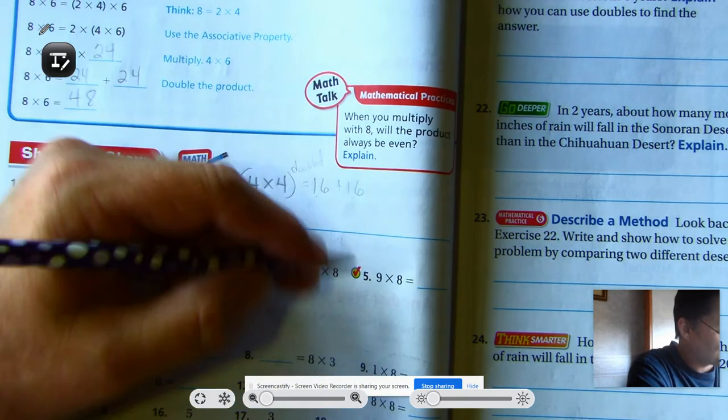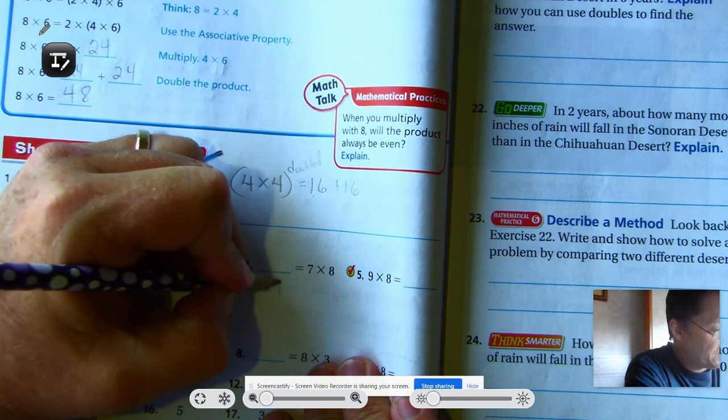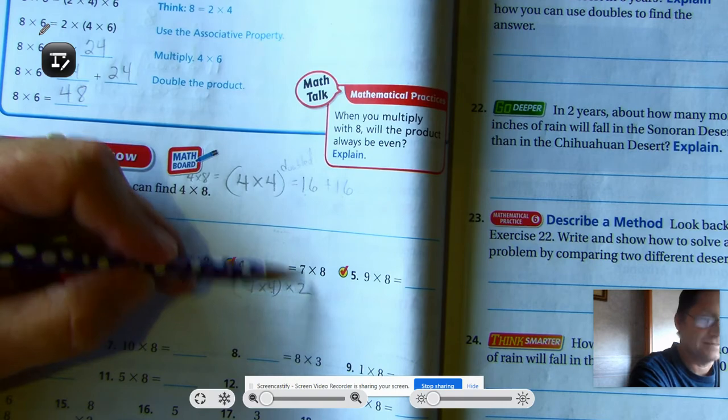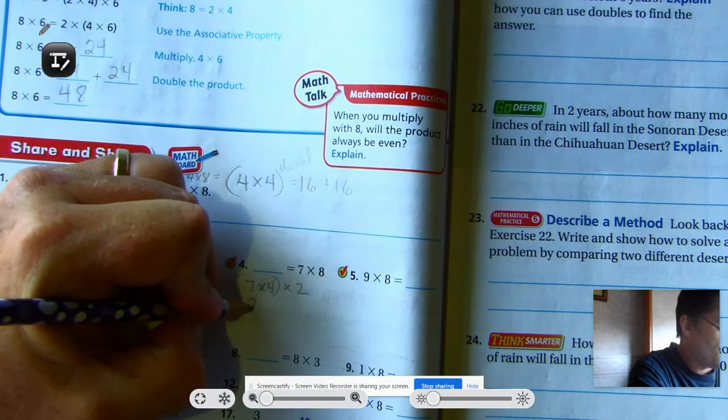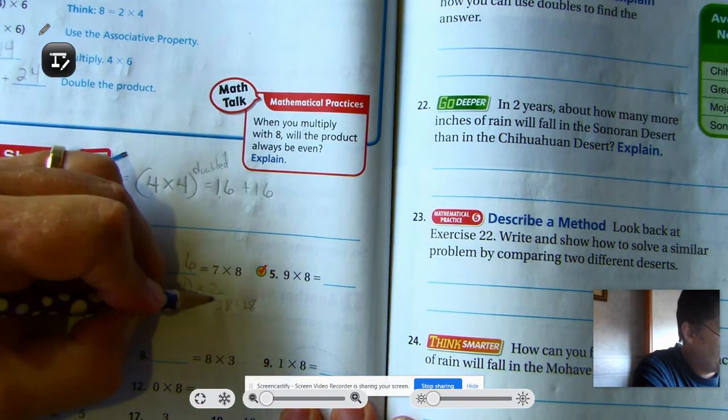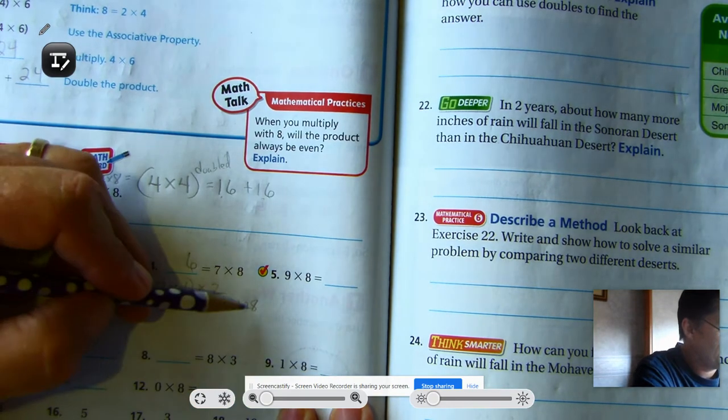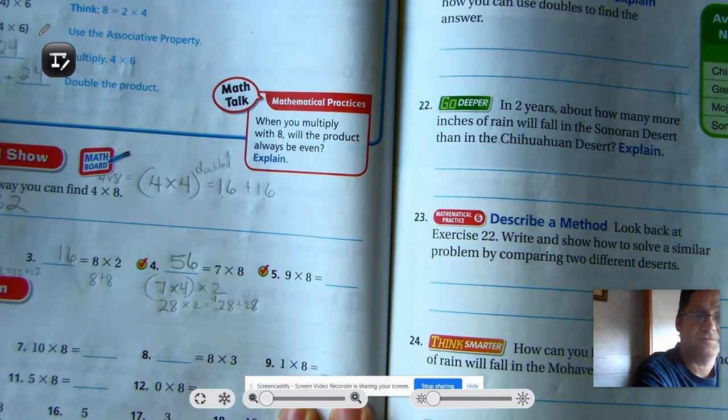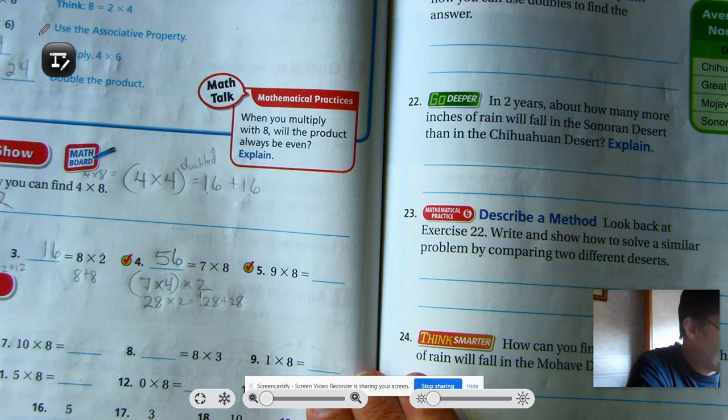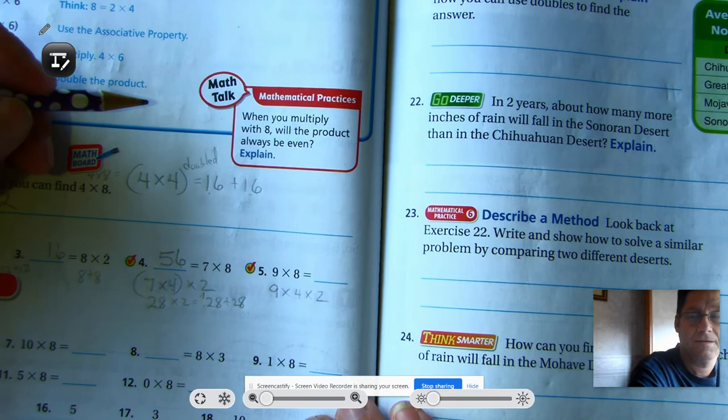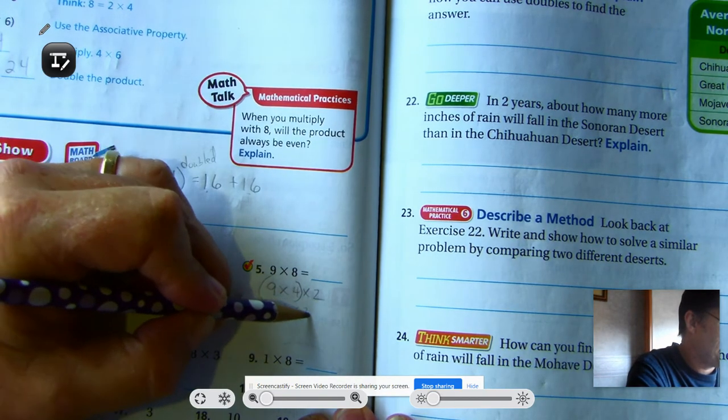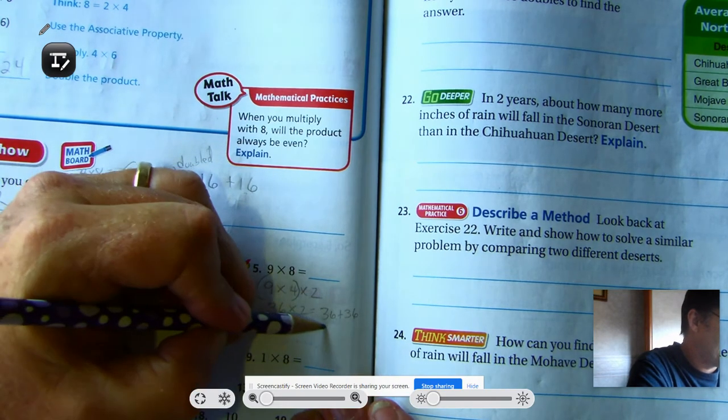Seven times eight is the same as seven times four doubled. So seven times four times two. The times two means to double this product. Seven times four is 28. Times two is the same as 28 plus 28. Eight and eight is 16. We group as one ten and six ones. Two tens plus two tens is four plus one more is five. So 56. Nine times eight.